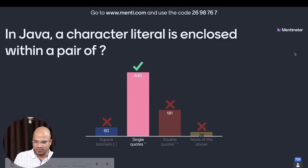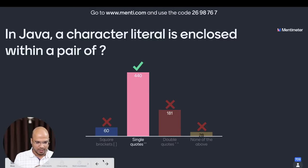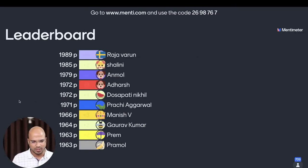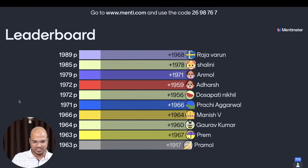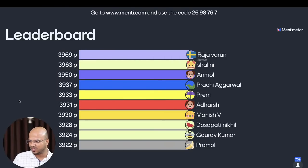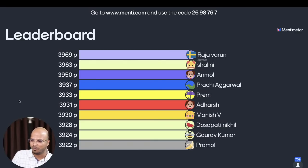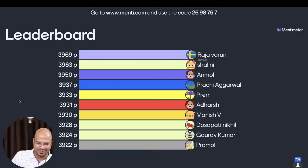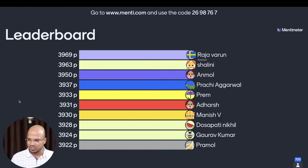We've done the first four questions and now let's see the leaderboard. Raja Varun is still on top — great! Then we got Shalini and Anmol. Look at the score — it's almost too close; the difference is microseconds between all these people. The remaining four questions we'll do after this session, because today's main session is very important — we are going to talk about arrays.